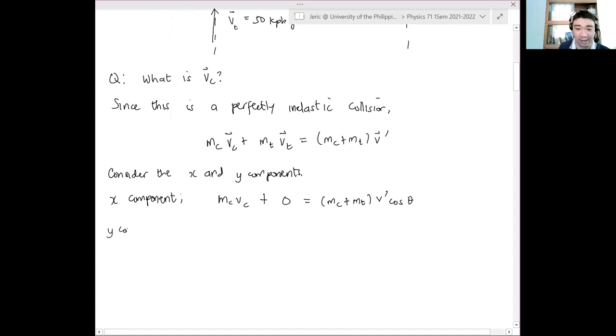On the other hand, for the y component, what happens? What happens to the y component? The car is now zero. Yes, car is now zero because this is just, again, in the x component, therefore, it shouldn't have a y component plus mt vt is just equal to mc plus mt quantity v prime sine theta. Right? So, let's say, this is equation 1 and this is equation 2.